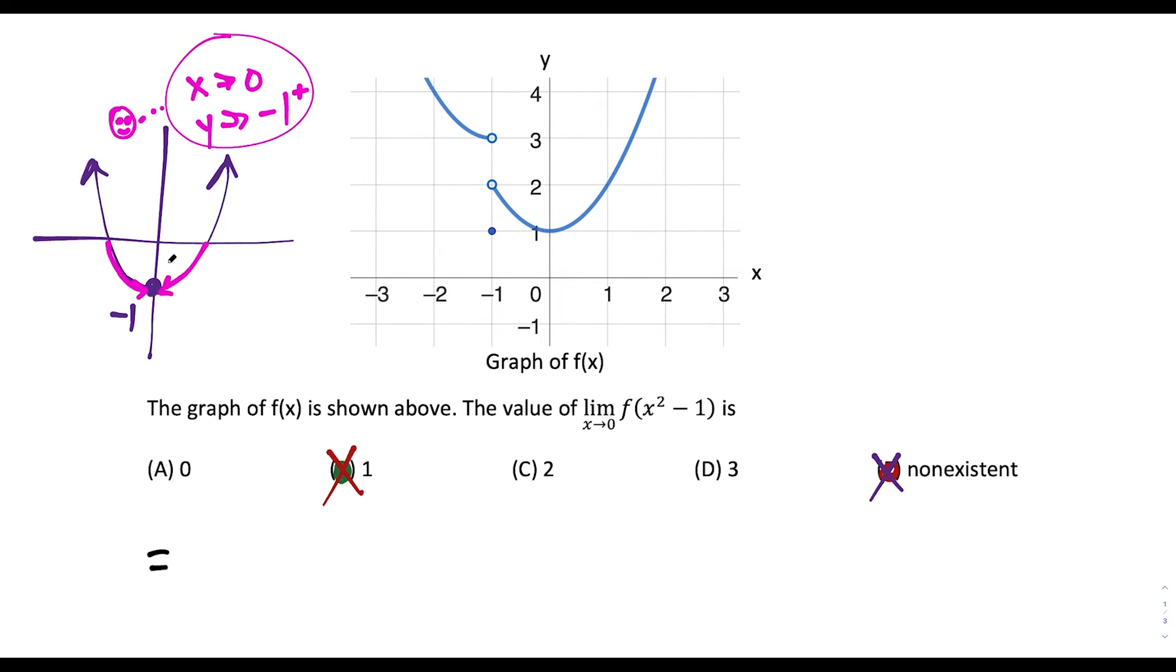because when we approach 0 from the left and right, we reach negative 1 from above, this tells us we can rewrite the limit. We're going to be approaching negative 1, but from the right side, from values greater than negative 1.